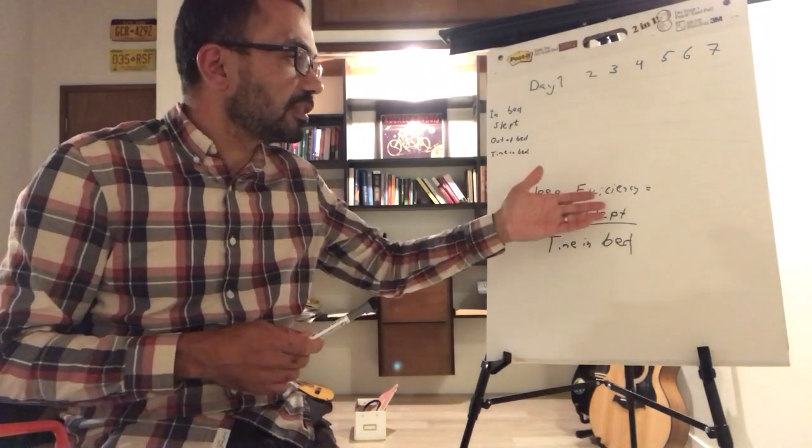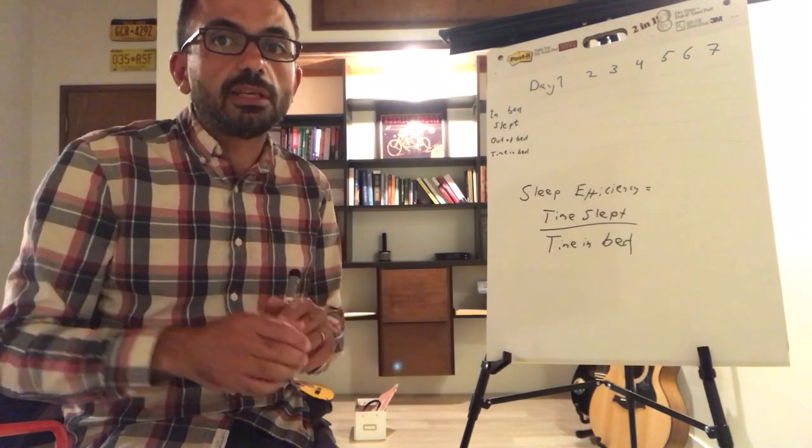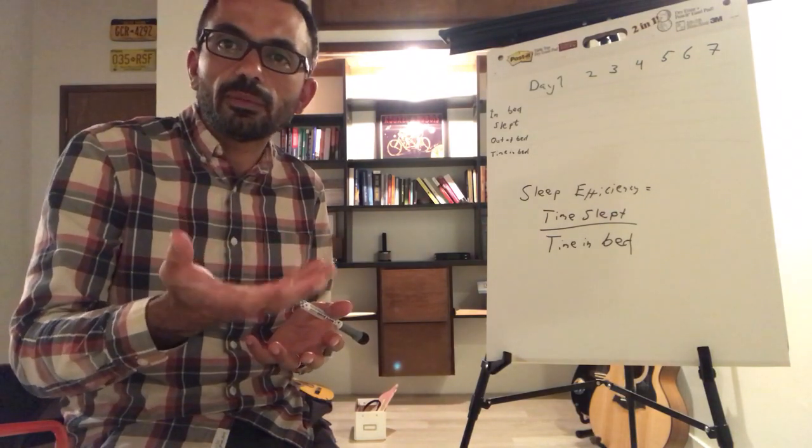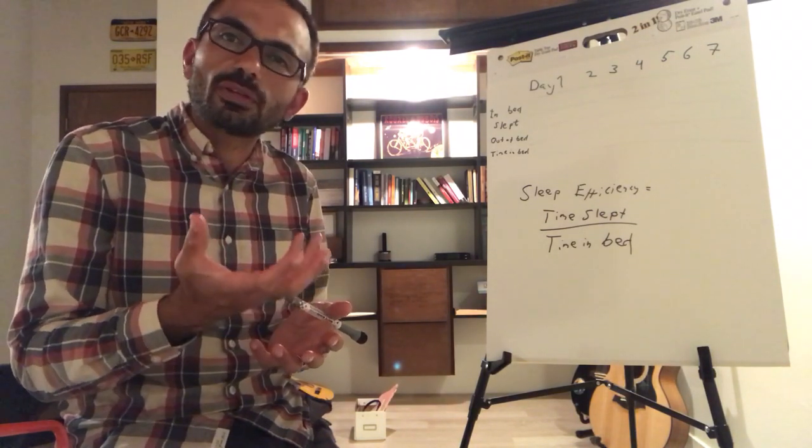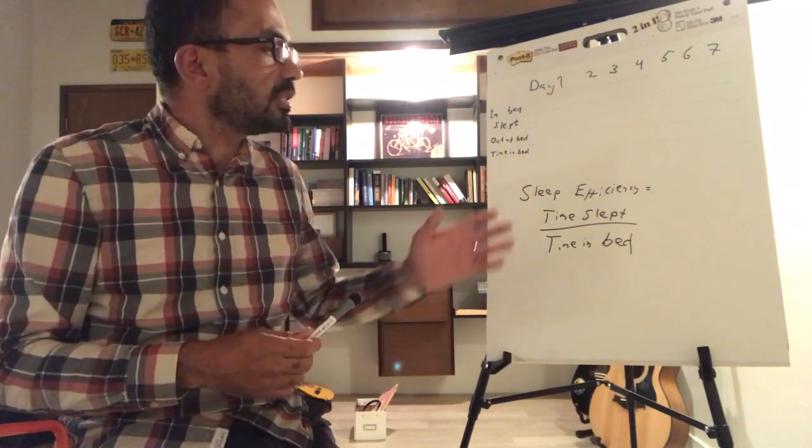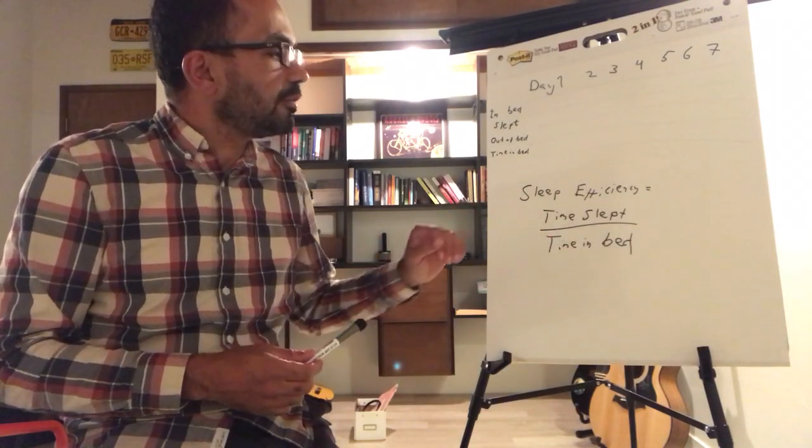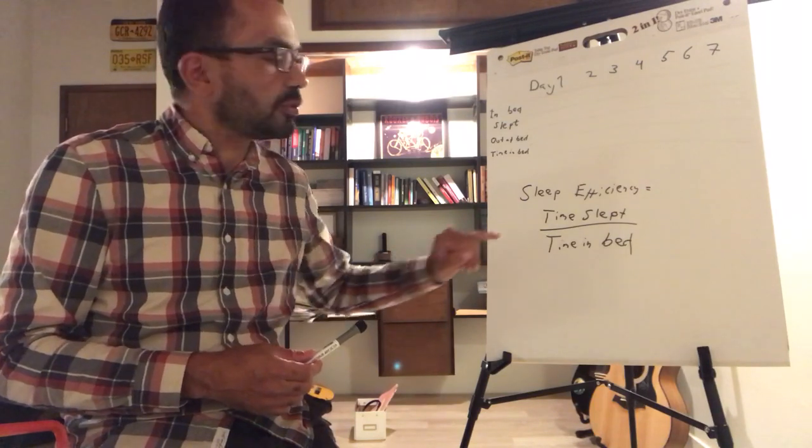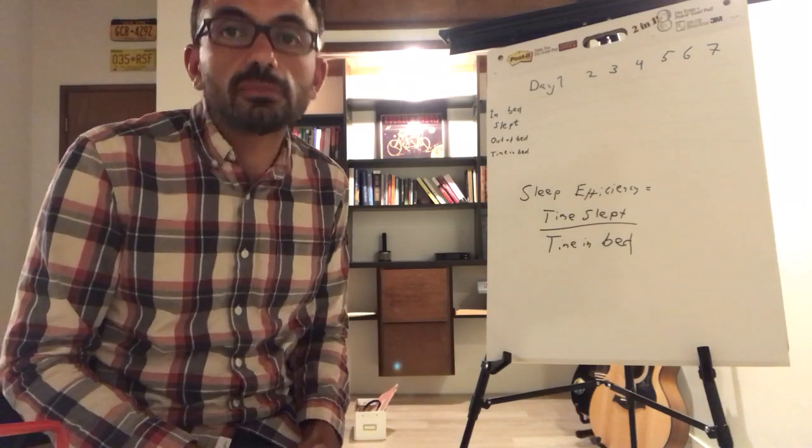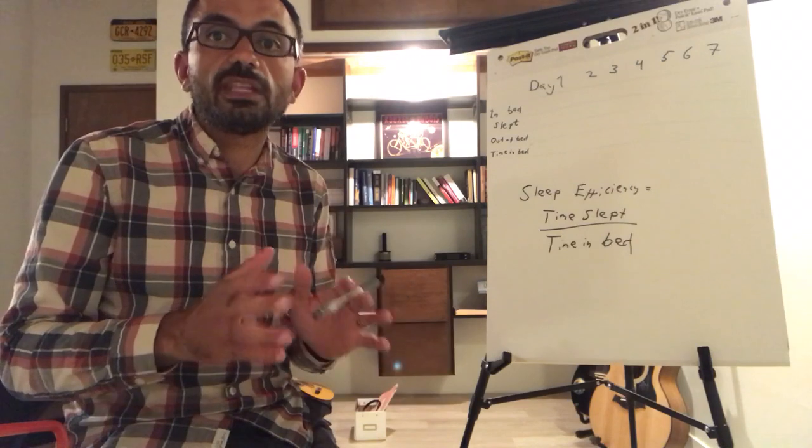And finally, as you can see here, I've written sleep efficiency and how to calculate that. Well, it's not very important now, but I want to mention it. Sleep efficiency is a way of quantifying the quality of your sleep. And it works as follows: sleep efficiency is time slept divided by time in bed. So for example, if you have slept four hours but you spent eight hours in bed, your sleep efficiency is 50%, which is terrible. Hopefully, you will be getting towards a sleep efficiency of 85% or even 95%.